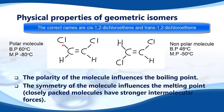Due to the arrangement of the chlorine atoms, cis-1,2-dichloroethene is a polar molecule. It has a boiling point of 60 degrees centigrade and a melting point of negative 80 degrees C. Trans-1,2-dichloroethene is a non-polar molecule. It has a boiling point of 48 degrees C and a melting point of negative 50 degrees C.